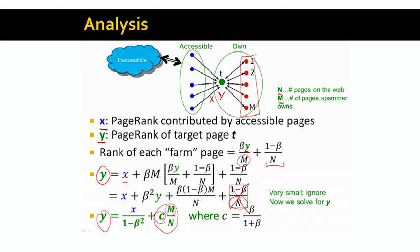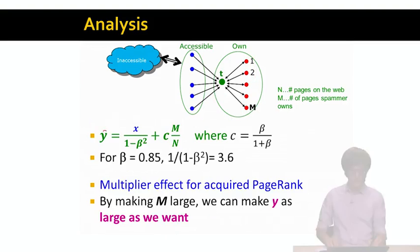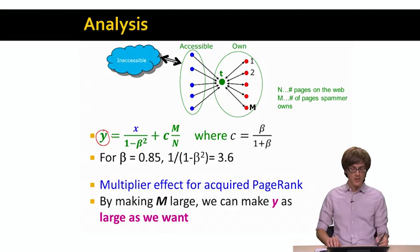So let's keep looking at what do we get. What we basically get is something like y equals x over 1 minus beta squared plus M divided by N plus some constant, where this constant is beta over beta plus 1. M is the number of pages that the spammer owns, and N is the number of pages that are on the web. So what this means is that the page rank score of our target page T equals basically the amount of page rank score that comes from the accessible part of the web, plus the ratio of M to N multiplied by some constant.